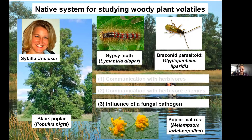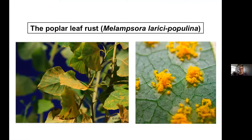Now for the pathogen story — the rust fungus. Sibylla noticed that at certain times of the year there were outbreaks of leaf rust on the poplar island, and that caterpillars tended to prefer plants that had rust on them. Melampsora larissi populina is a Basidiomycete biotroph — a plant pathogen and the most widespread pest of poplars, both cultivated and wild. As the name implies, it has two hosts: it's also present on larch as part of its life cycle.